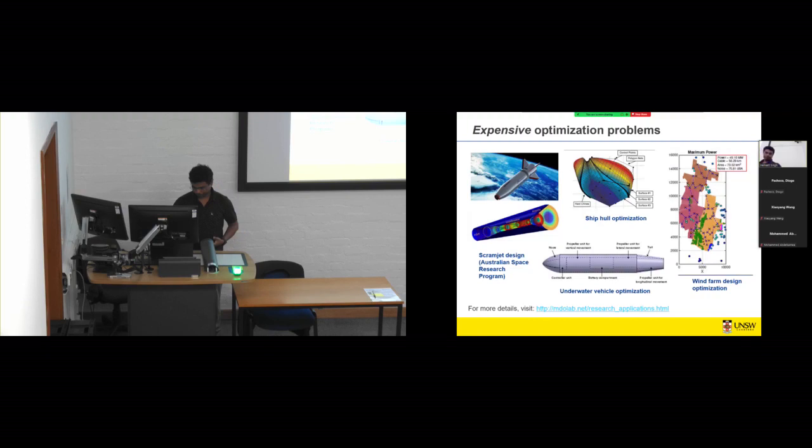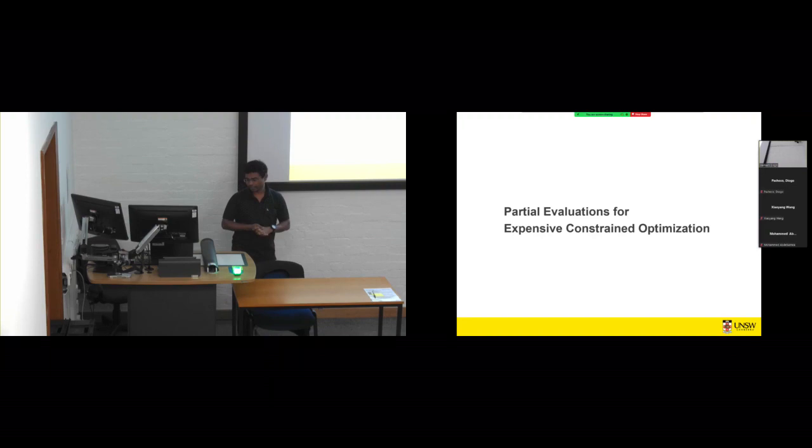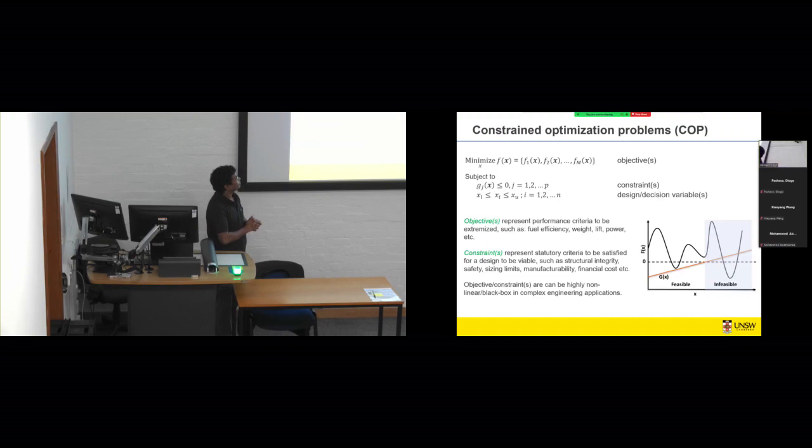So I'll come to the first topic that I want to discuss in more detail today, which is the partial evaluations for expensive constraint optimization. So constraint problems look a bit like this. So you have on the top a few objectives, these functions f, and they are subject to some constraints, g less than or equal to 0. So this is a generalized form. Now, objective is what we are trying to optimize, so maximize or minimize. So we're trying to maximize fuel efficiency, minimize weight of a design, et cetera. And then constraints are the criteria of which we must not violate while searching for those designs, such as structural integrity, safety, manufacturability, cost.